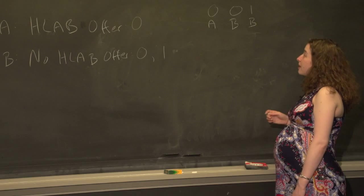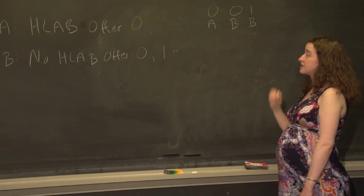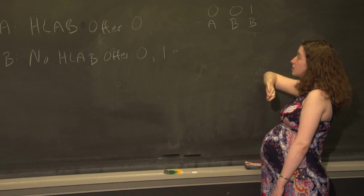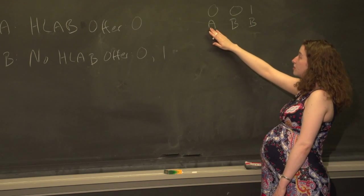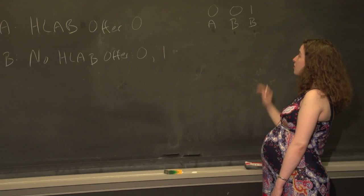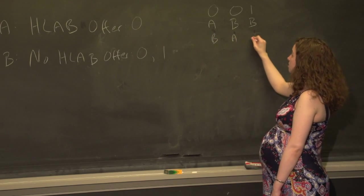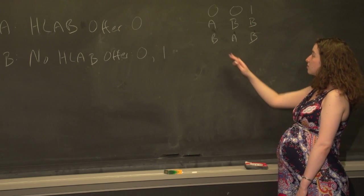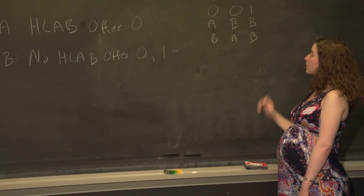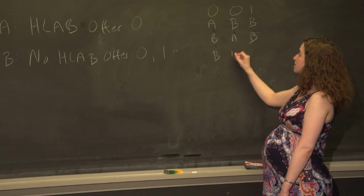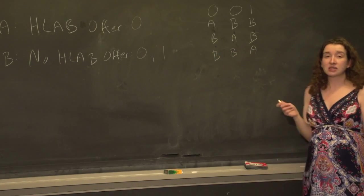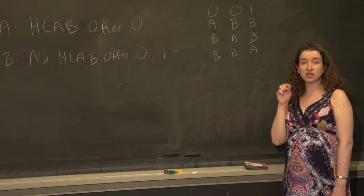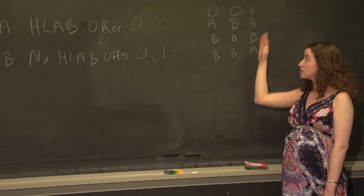Let's think about how else our dataset might have turned out. What actually happened is person one was assigned to group A and persons two and three were assigned to group B. But it could have gone this way: person two assigned to group A and persons one and three assigned to B. And it could have gone like this as well — person three in A and persons one and two in B. Those are all the possibilities.